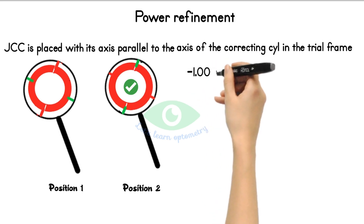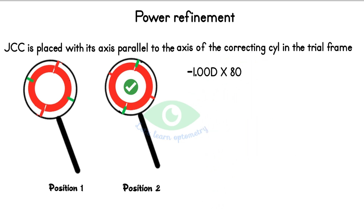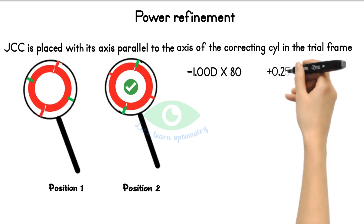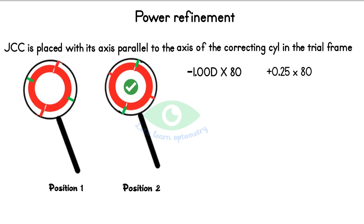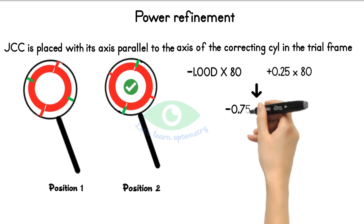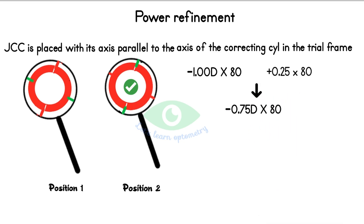For example, the correcting cylindrical lens is minus 1 at 80 degrees and we are using a 0.25-diopter JCC. The patient prefers the plus axis in position 2. This means we reduce the minus cylinder by 0.25 diopter. Repeat the same steps until the patient says both positions are equal in clarity.